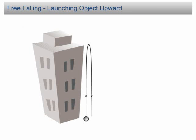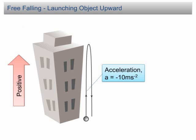Free falling — launching object upward. As we mentioned before, we need to determine the positive direction of the motion, and we are always advised to take the direction of initial movement as the positive. In this case, initially the object is moving upward, therefore we take upward as the positive direction. When the object is moving upward, its velocity decreases, so the object undergoes deceleration and the acceleration will be negative. Since this is free falling, the magnitude of the acceleration is equal to the gravitational acceleration, which is 10 meters per second per second. In conclusion, the acceleration is equal to negative 10 meters per second per second.